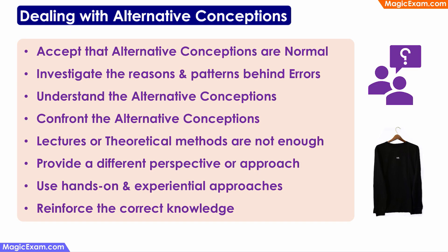Let us look at how to deal with alternative conceptions in the classroom. The first step is to accept that alternative conceptions are normal — everyone carries some type of alternative conception in their mind, small or big. Next, whenever we come across errors by children in the classroom, we have to investigate the reasons and patterns behind such errors. Are they because of simple mistakes or because of alternative conceptions? If they are because of alternative conceptions, we have to understand them first, because we cannot correct anything we cannot understand.